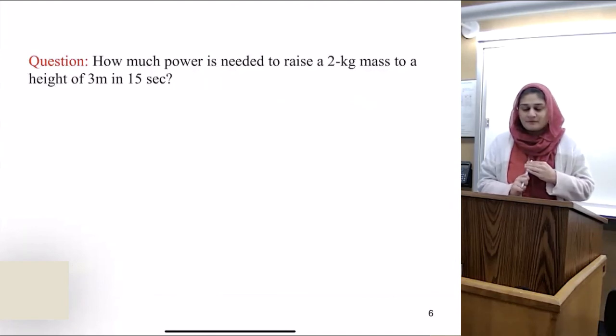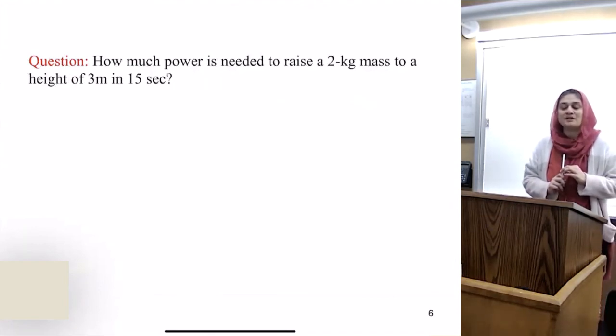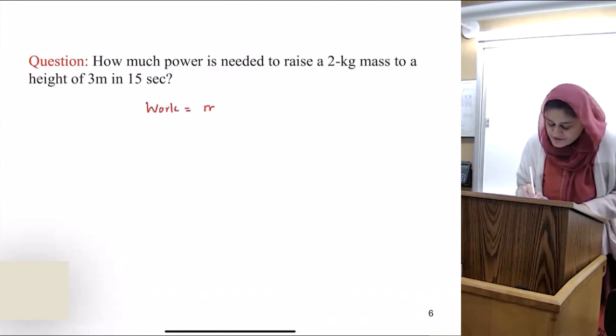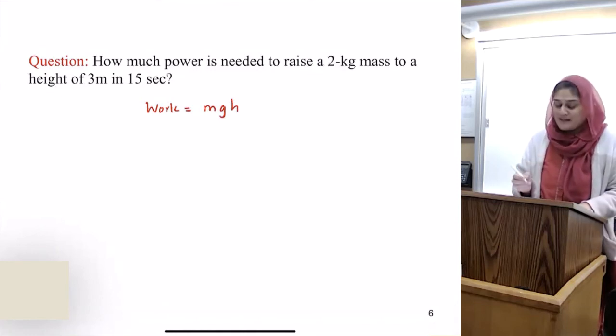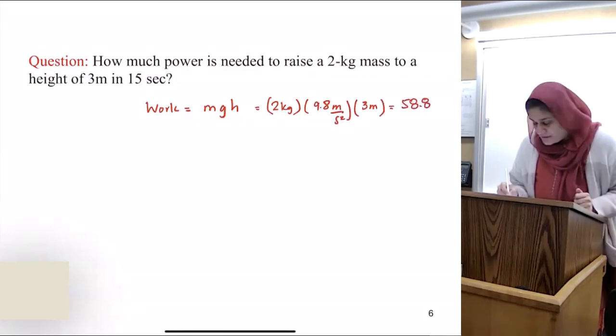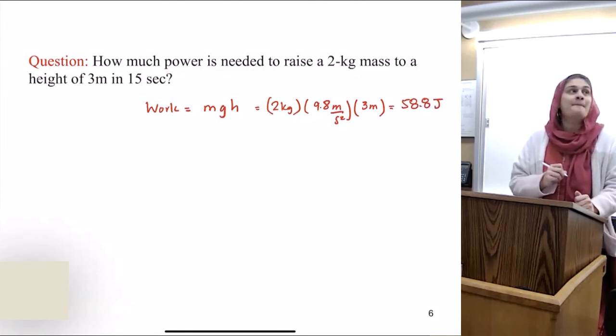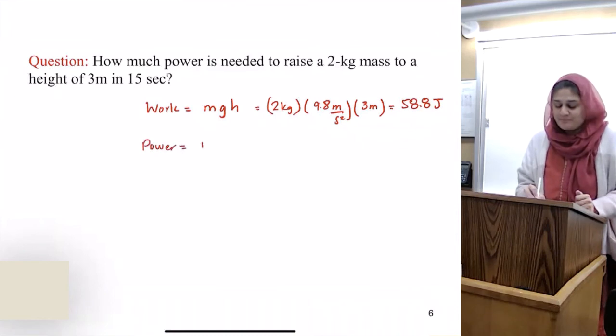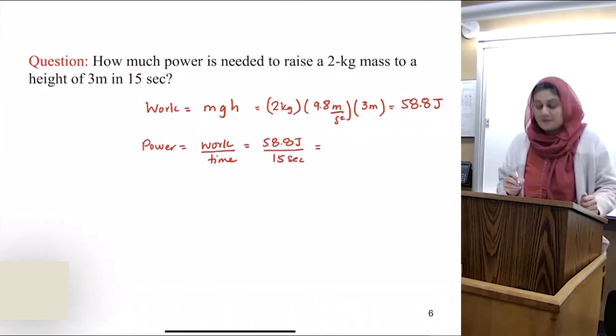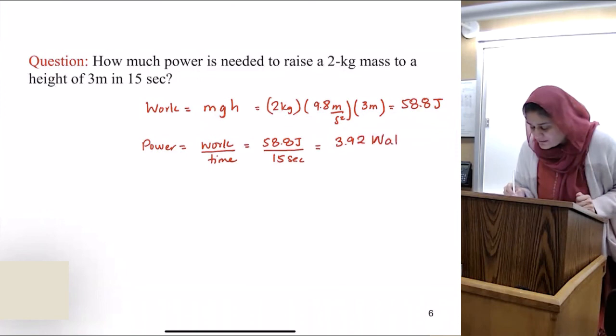So here's a question. How much power is needed to raise a 2-kilogram mass to a height of 3 meters in 15 seconds? So you will find the work first, which is mgh. What's the mass that's given? 2. What's the g? 9.8. And what's the height it needs to go? 3. That's 58.8 joules. So then how will I find power? Work per time. So what is work? 58.8 joules. And what was the time? 15 seconds. So power will be 3.92 watts.